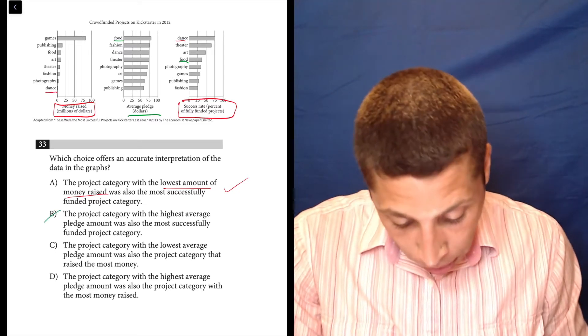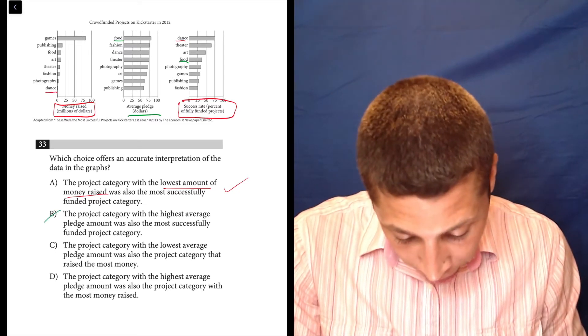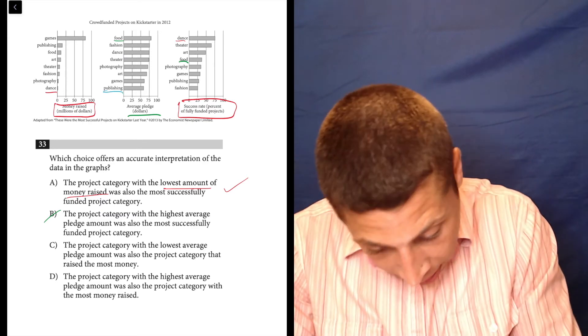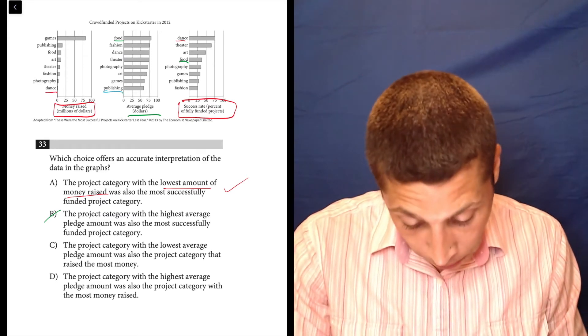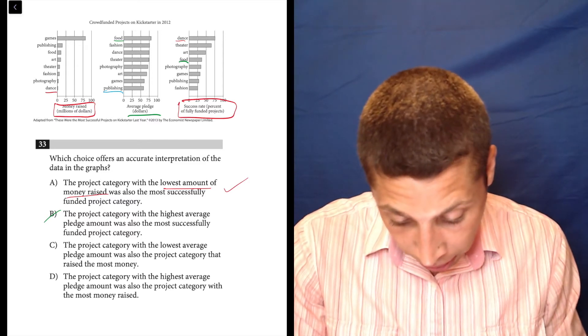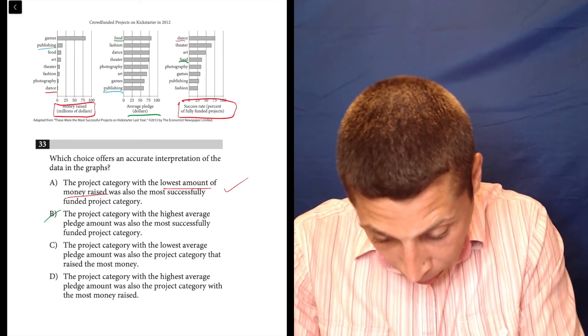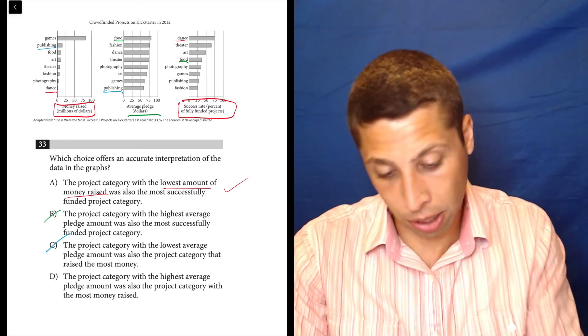C, the project category with the lowest average pledge amount, so pledge amount is here, so that's publishing, was also the project category that raised the most money. So raised the most money is games, publishing is second most. So no, that's not true either.